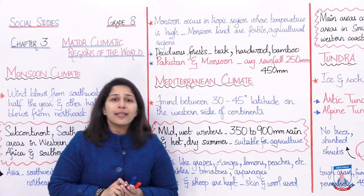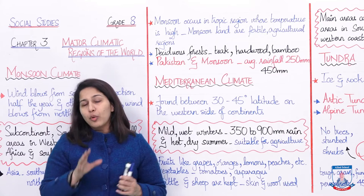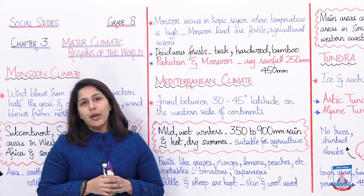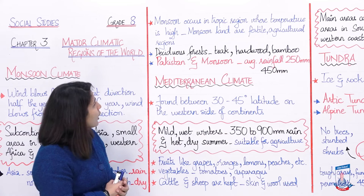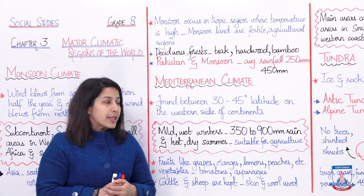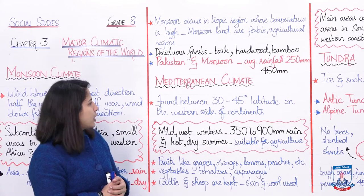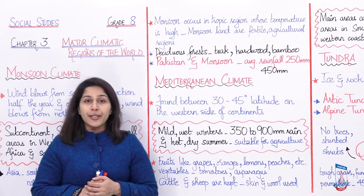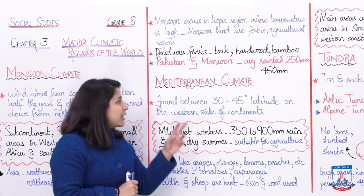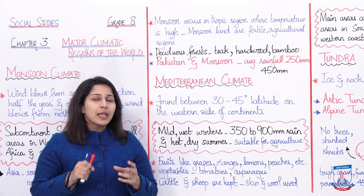So all in all, monsoon climate is a climate with heavy rainfall which is very useful for crops and soil. Moving on — Mediterranean climate. Yeh aisa climate hai which is found between 30 to 45 degrees latitude on the western side of continents. That is the exact location of the region where Mediterranean climate is found.